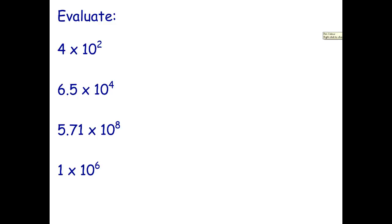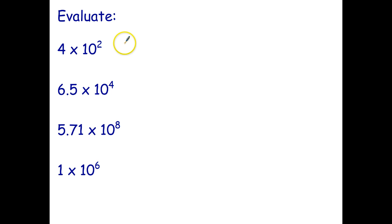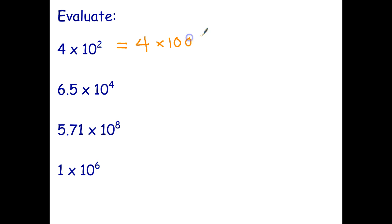So let's start with a few questions you can actually solve already without me having to teach you anything new about scientific notation. I want you to evaluate 4 times 10 to the negative 2. I'll do the first one and have you do the remaining 3. Notice that all of these are in scientific notation — a number between 1 and 10 multiplied by a power of 10. So 4 multiplied by 10 squared: 10 times 10 is 100, and 4 times 100 is 400.